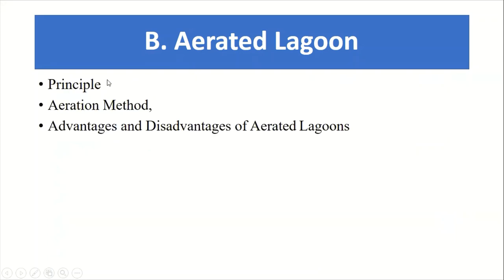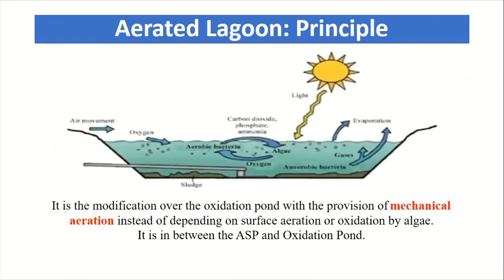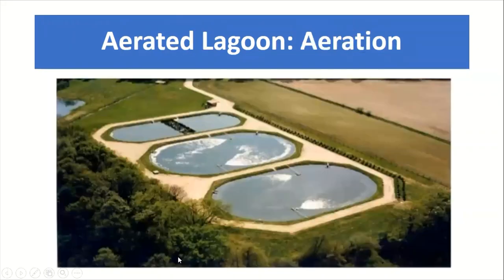First we look at the principle, then the aeration method, then the advantages and disadvantages of the aerated lagoon. The aerated lagoon is a modification over the oxidation pond, with the provision of mechanical aeration instead of depending on surface aeration or oxidation by algae. It is between the activated sludge process and the oxidation pond.